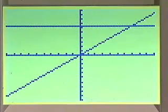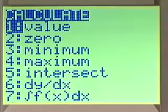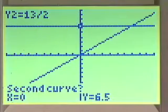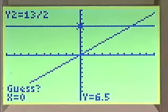The intersection of the two graphs is the solution to the equation. To find that solution, we can do 2nd calc 5 intersect. Our first curve is y1, our second curve is y2, so we hit enter each time there.